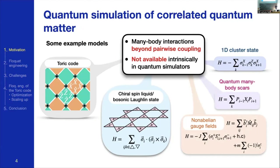Why did I select these specific models? They all have one feature in common: they all include interactions that go beyond pairwise coupling. So instead of two-body interactions, we have three or four-body interactions. These kinds of interactions we usually don't have in engineered quantum systems we want to use as quantum simulators — whether ultracold atoms in optical lattices or superconducting qubits — where we typically restrict ourselves to two-body and single-spin couplings.